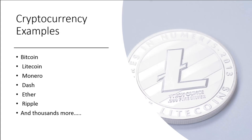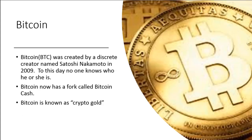Pretty much anything that is not Bitcoin is considered an altcoin. For this course, we won't get too deep into the differences and how you trade. The goal of the course is to give you that foundation and help enable you to find out more. Bitcoin was created by a discrete creator named Satoshi Nakamoto in 2009. No one knows who this person is. Bitcoin now has a fork called Bitcoin Cash. Bitcoin has always been known as crypto gold because of its meteoric rise. Bitcoin was released in a white paper in 2008 but didn't really go live until 2009. We'll do a demo on looking for the Genesis block for the Bitcoin network.